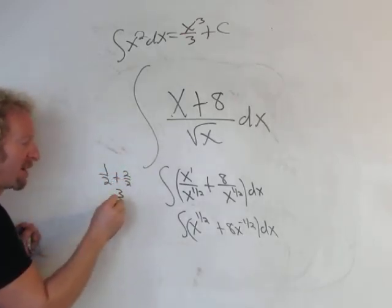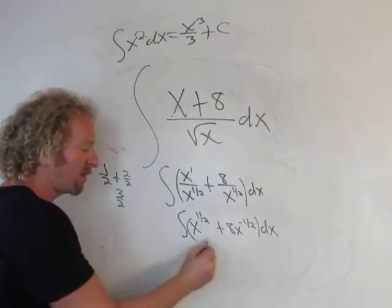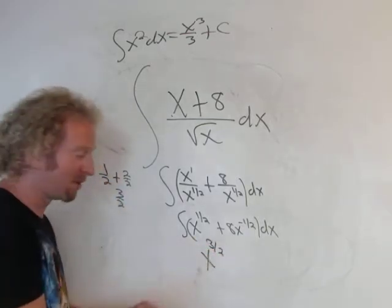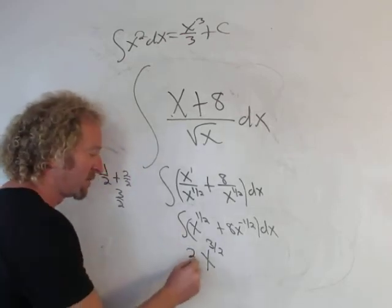So here, 1/2 plus 1, that's 3/2, right? Because it's really 1/2 plus 1 which is 2/2, that's 3/2. So 1/2 plus 1 is 3/2, so we get x to the 3/2. And then you drop the integral sign, then you divide by 3/2, but instead of dividing by 3/2, you can multiply by the reciprocal.